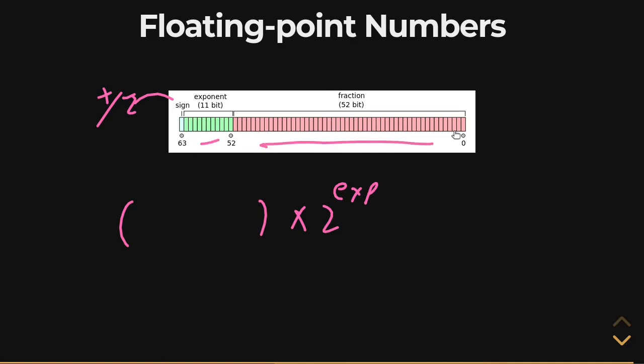And then over here, we've got our fraction. Our fraction, also known as our significand, is just a 52-bit integer that goes in here. That's all there is to it. It's just a 52-bit number. And we represent that as roughly something on the order of 16 significant digits. That's what 52-bits gets you.